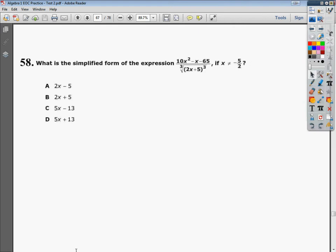Welcome, this is the Algebra 1 EOC Practice S2, question number 58. The question says, what is the simplified form of the expression 10x squared minus x minus 65 over the cube root of 2x plus 5 to the third power, if x is not equal to negative 5 over 2?